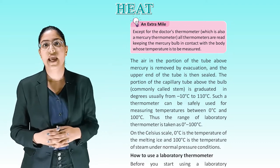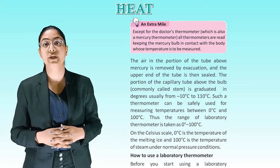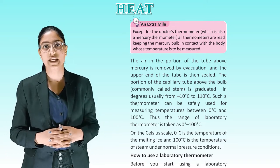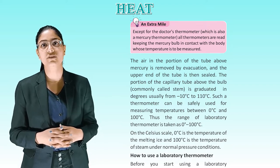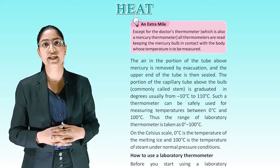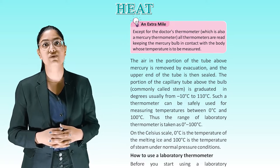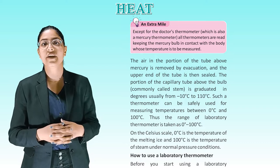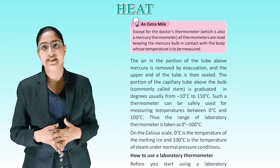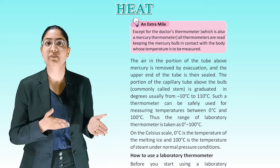Except for the doctor's thermometer — which is also a mercury thermometer — all thermometers are read keeping the mercury bulb in contact with the body whose temperature is to be measured. The air in the portion of the tube above the mercury is removed by evacuation, and the upper end is then sealed. The stem is graduated in degrees, usually from −10°C to 110°C. Such a thermometer can safely measure temperatures between 0°C and 100°C. On the Celsius scale, 0° is the temperature of melting ice and 100° is the temperature of steam under normal pressure conditions.